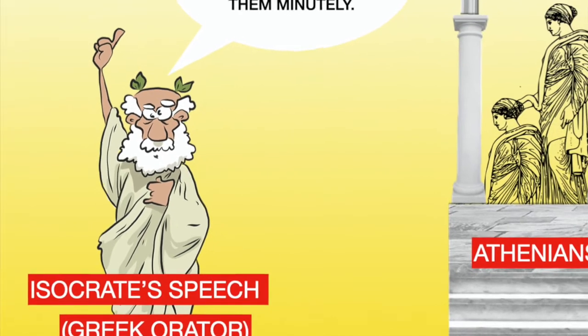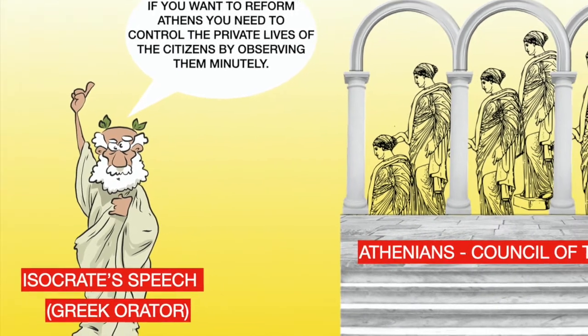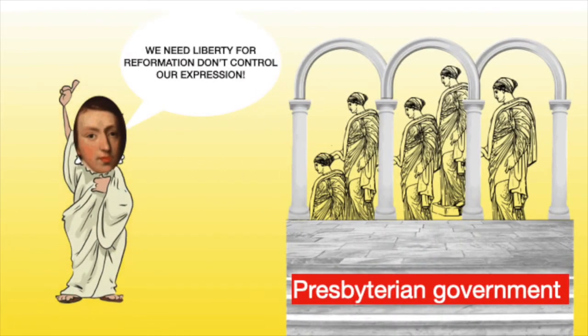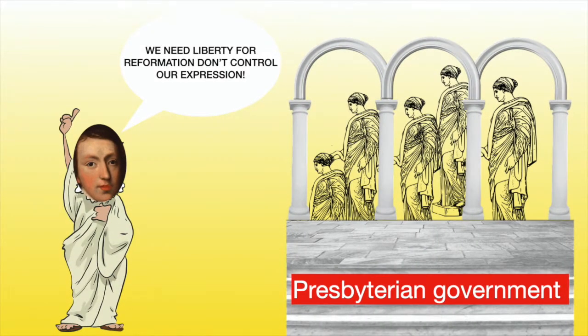What is ironic is that Isocrates supports control by the authority — that to reform Athens, you need to control the private lives of citizens by observing them minutely. In contrast, Milton is against the idea of control by the authorities: we need liberty for reformation and should not have our expression controlled.